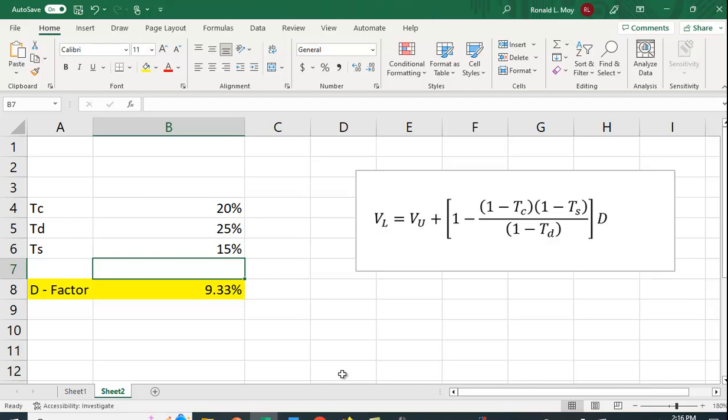What we can do is we can change some of these numbers and see how things impact this factor here, that is, how much it increases the value of the leveraged firm by using debt. Let's say instead of the tax rate on stock being 15%, let's say it's 20%. Well, that causes this to increase, and that makes sense, because a higher rate on stock income is going to encourage individuals to favor debt income.